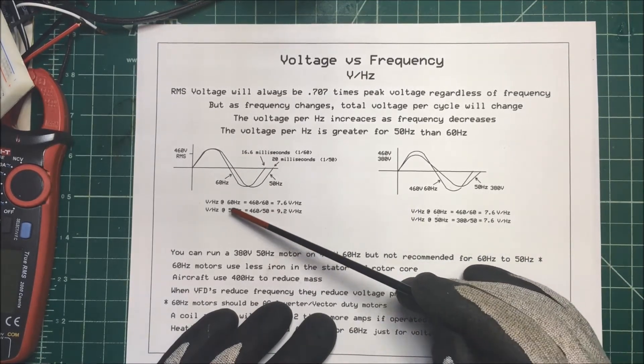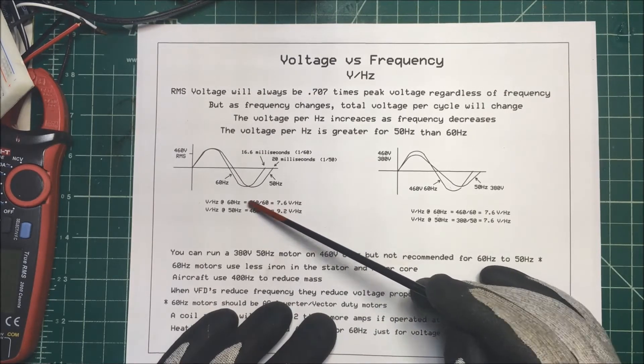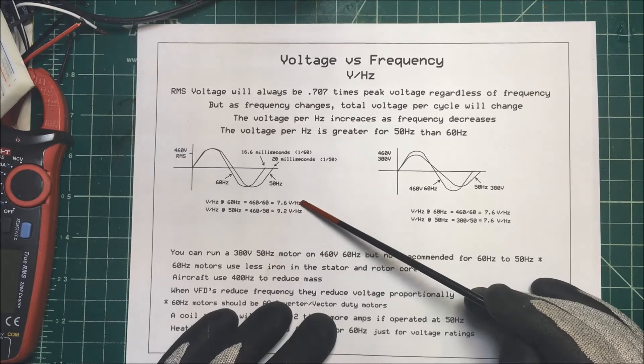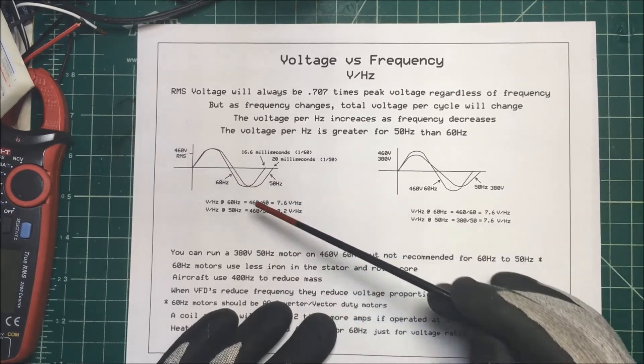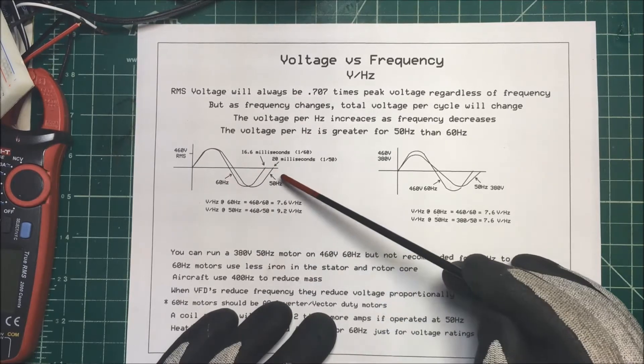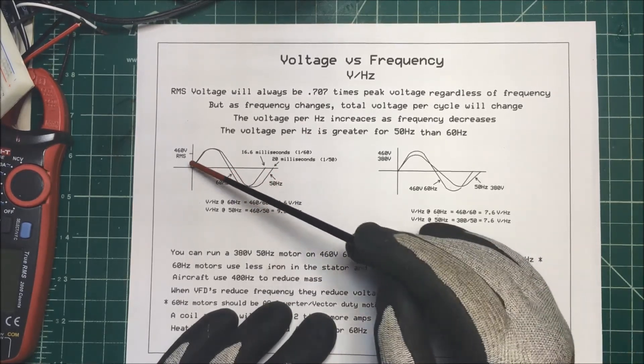So if we calculate the volt hertz for each of these, we take our 60 goes into 460, we get 7.6 volt hertz. And if we take our 50 and we divide that into our 460, we're going to get 9.2 volt hertz. So your voltage is going to be greater for this time period.